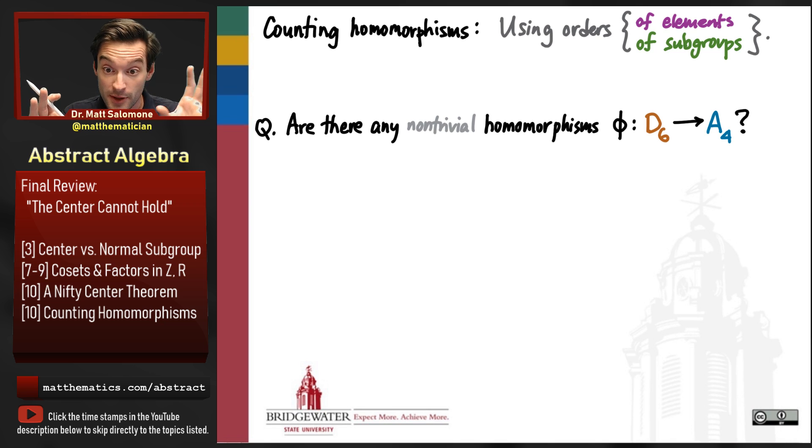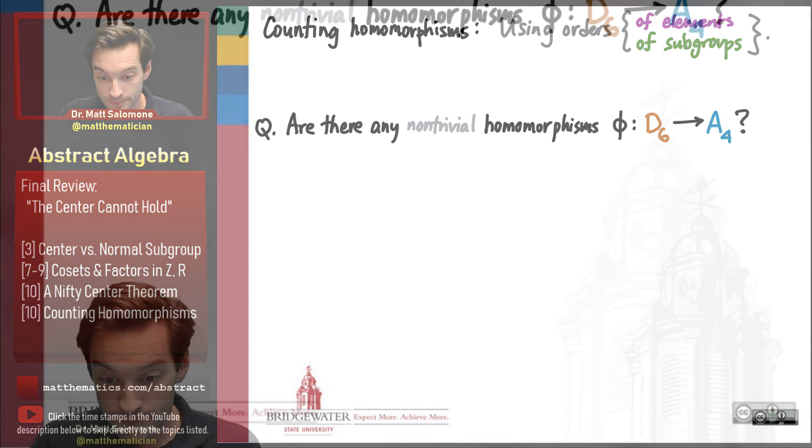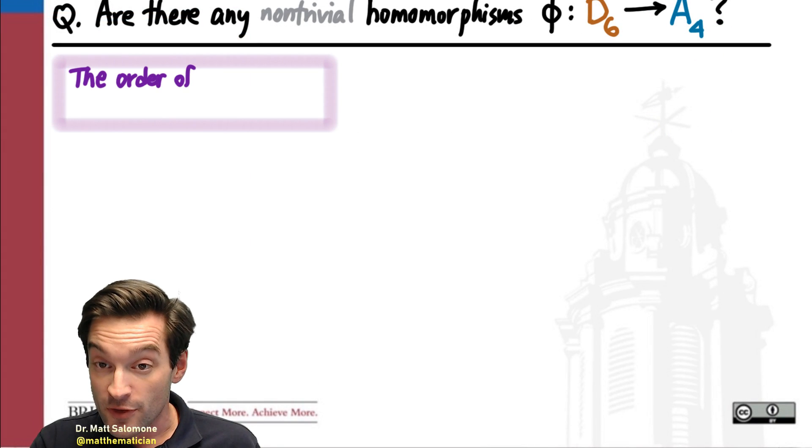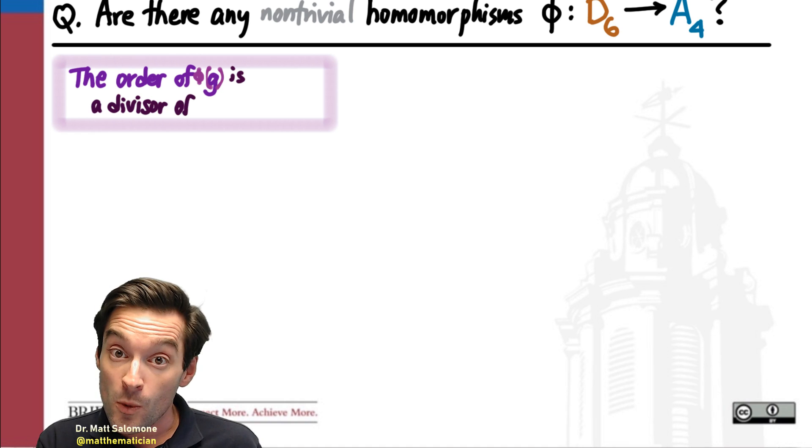So these are two non-abelian groups that both have order 12. Can I find any non-trivial homomorphism from one of them to the other? So what is the nature of the information we're going to be able to use? First of all,